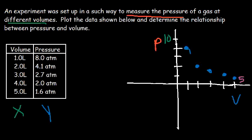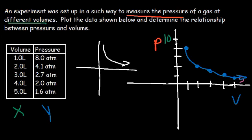We have a graph that is decreasing over time. So what kind of relationship do we have? Whenever you have a graph that looks like this, this is an inverse relationship. As volume increases, pressure decreases. So we have an inverse relationship graph, and that's all we can do for this particular problem.